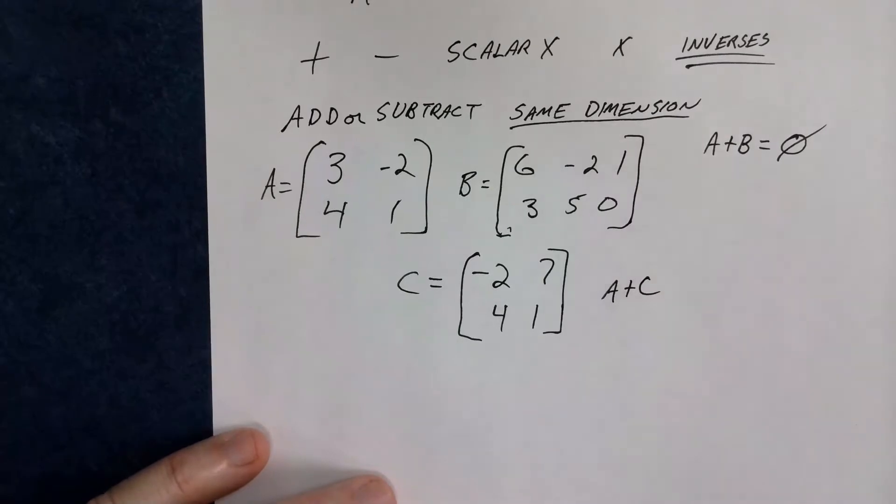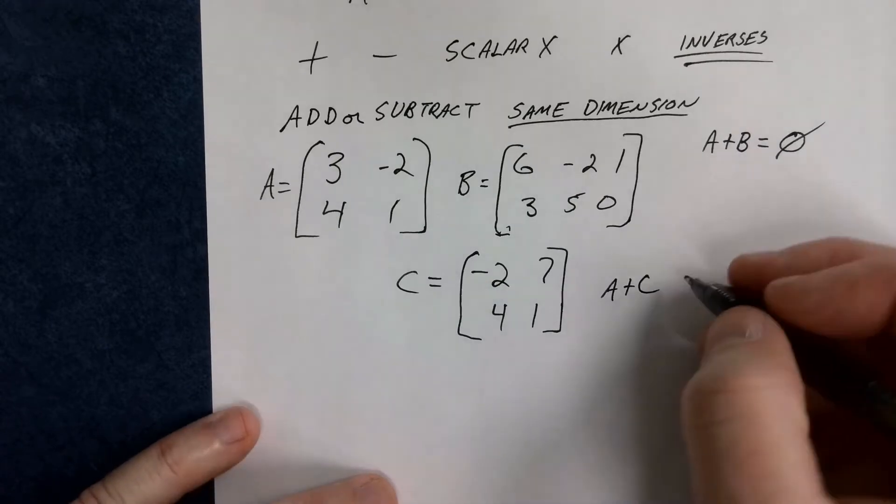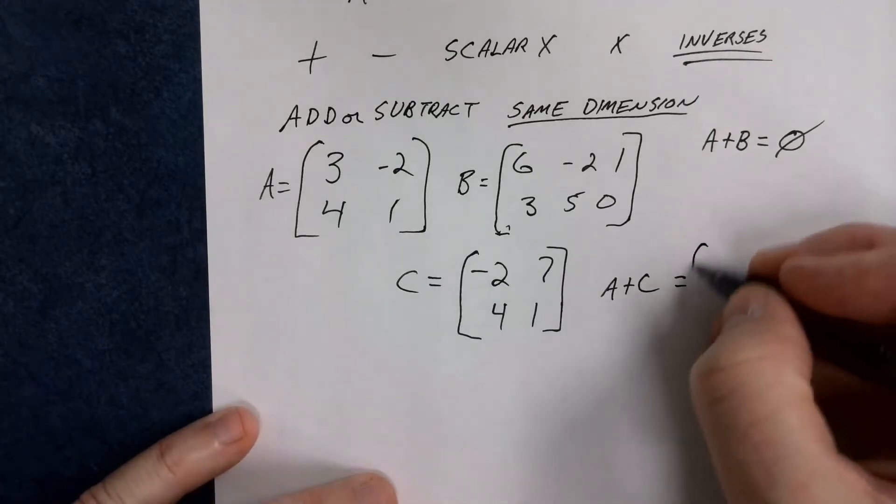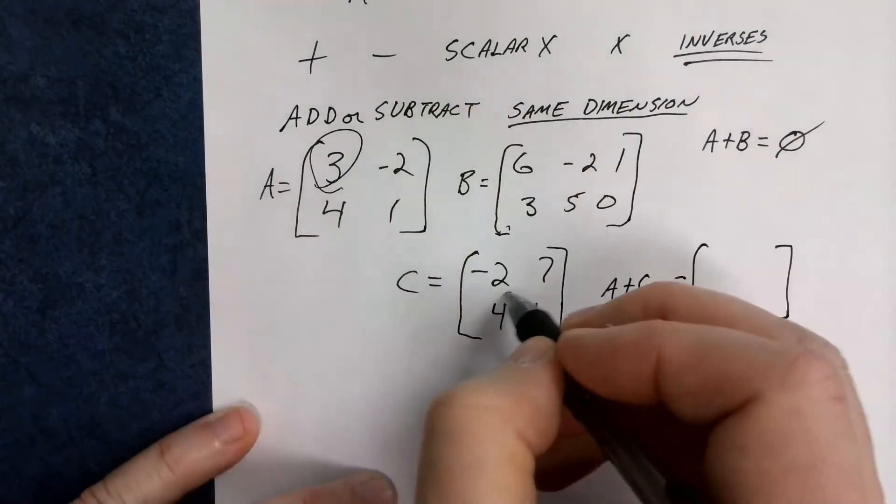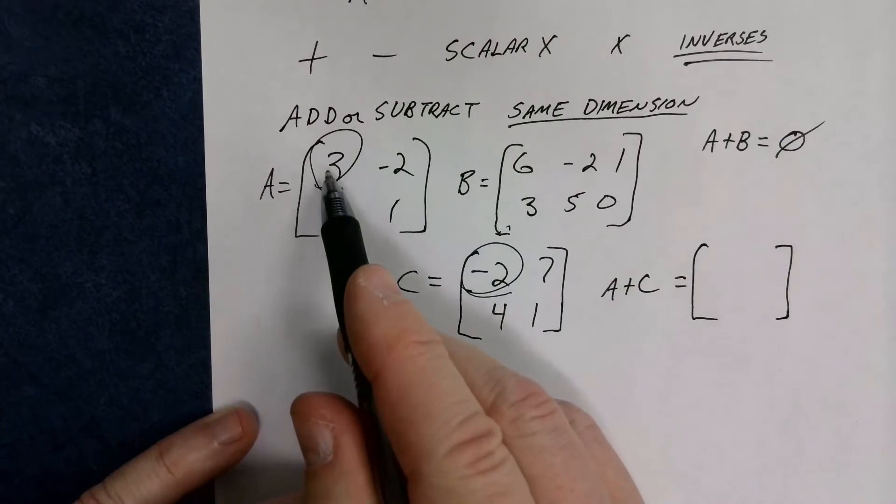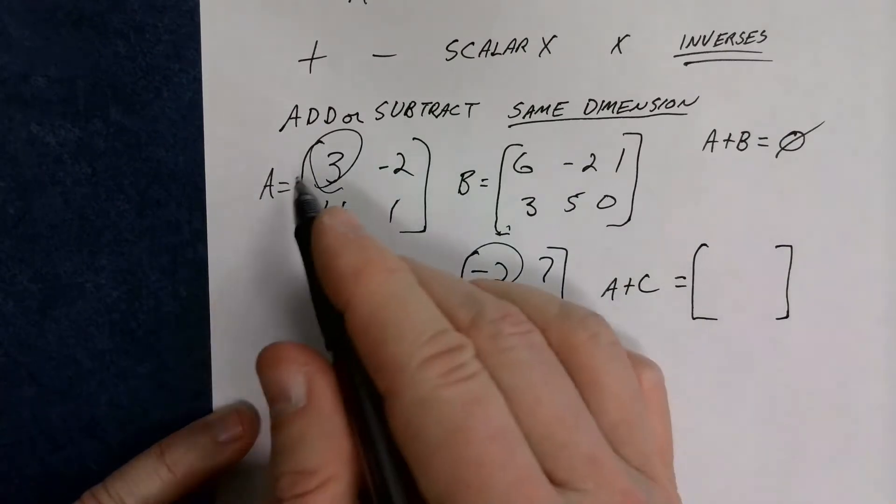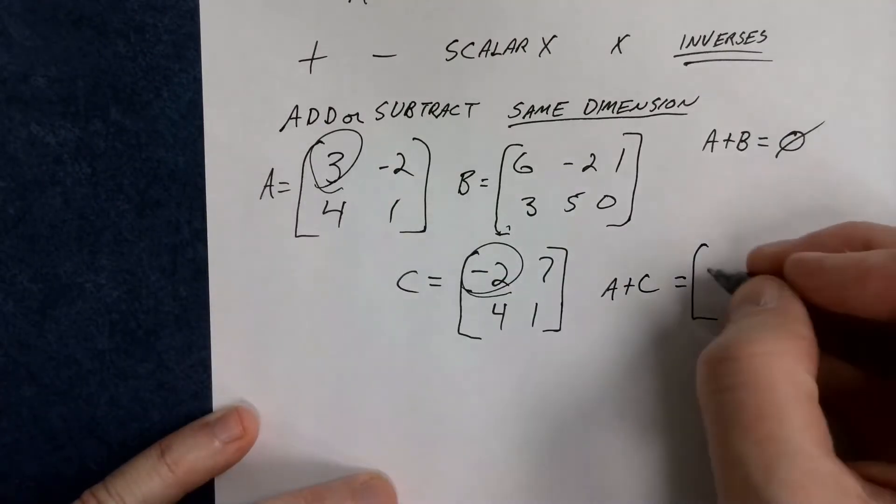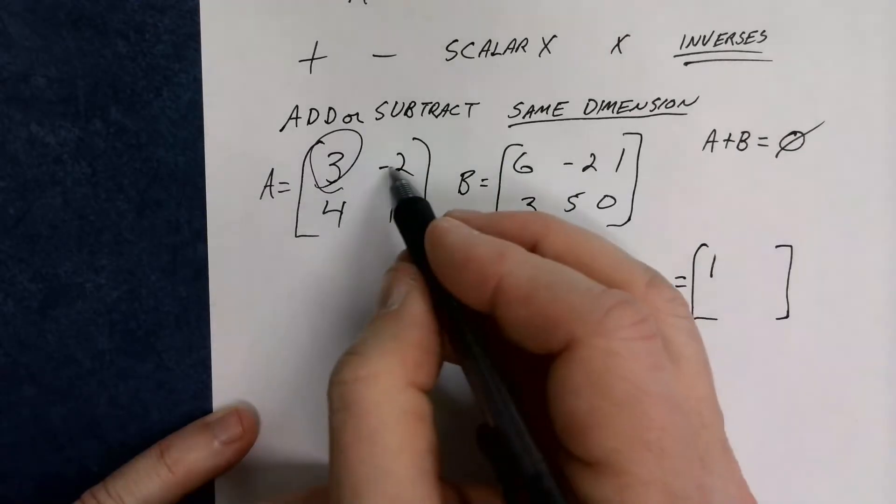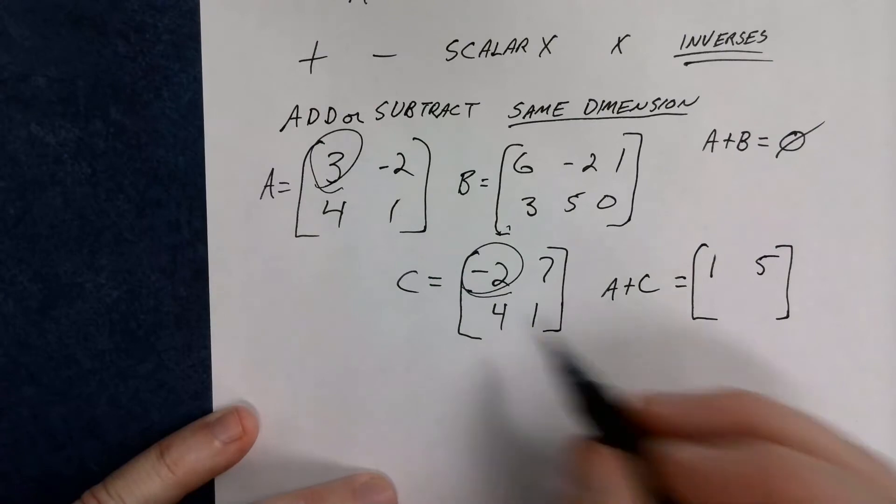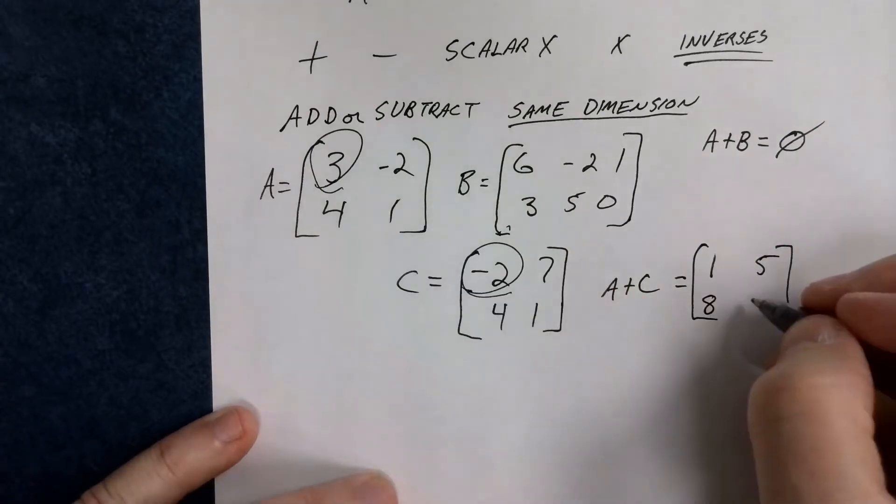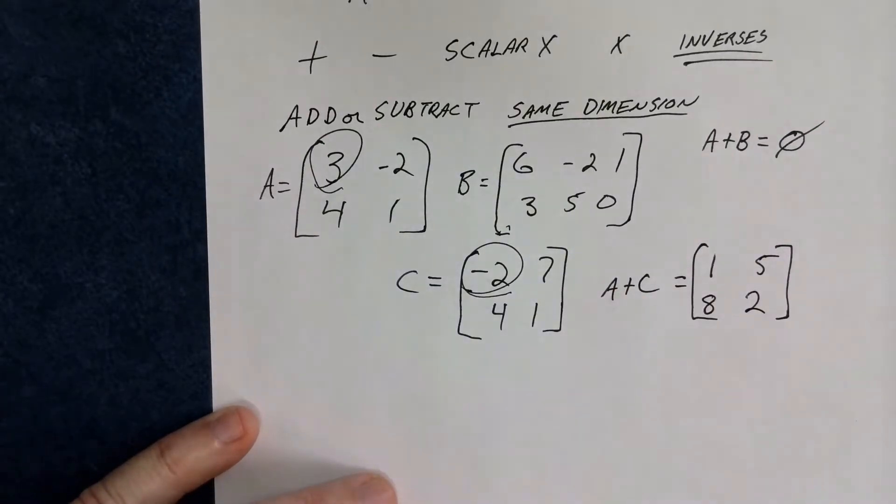And again, take notes as you go down through this. Don't just kind of nod your head. Make sure you're writing things down. So what does A plus C actually equal? Well, we simply have to add the two things that are in the same cell location. So R1, C1 here with R1, C1 here. 3 plus negative 2 is 1. Negative 2 plus 7 is 5. 4 plus 4 is 8. And 1 plus 1 is 2.